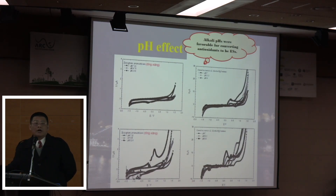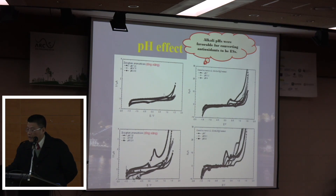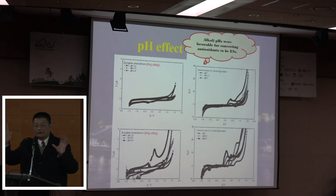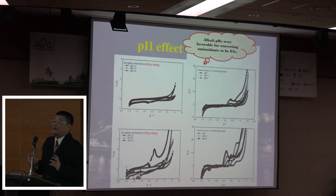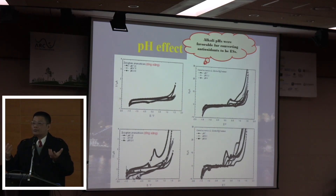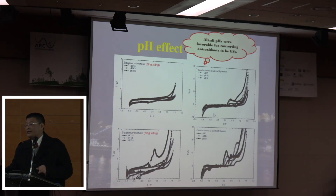Environmental conditions are crucial for determining whether electrochemical activity functions as an electron shuttle or antioxidant. I chose Ding Xiang and green tea as examples. At different pH levels, higher pH shows a larger CV profile area, indicating higher electrochemical activity and a greater opportunity to function as an electron shuttle. A similar result was found for many medicinal herbs; I just chose green tea and Ding Xiang as examples here.